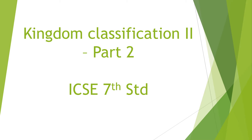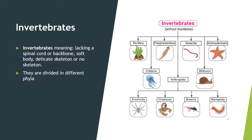Hello children. In the last video we covered kingdom classification. Today we will see about the invertebrates. Invertebrates meaning lacking a spinal cord or backbone — soft body, delicate skeleton or no skeleton.